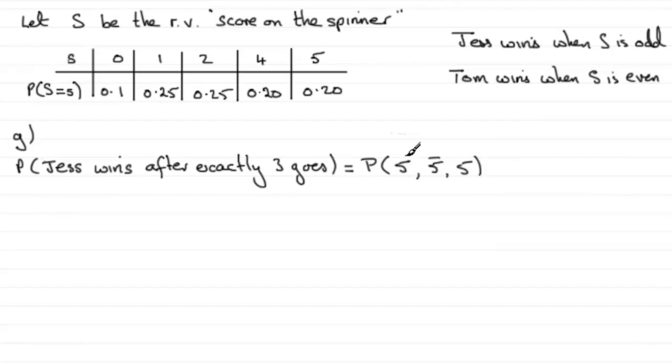So that would give us a win, a total of ten here. Is there any other thing that can happen? Yes there is. You could find that the spinner gives us not a five first of all, but then two fives afterwards. So we've got a total of ten and we've got a win exactly on that third go.